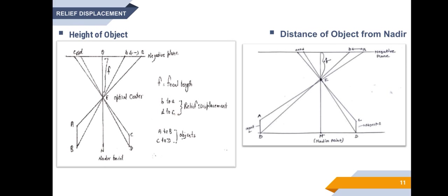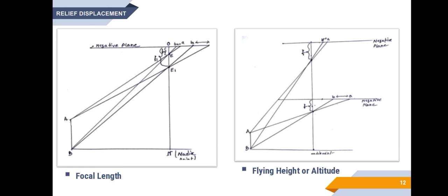In the second case — distance of object from the nadir — two objects of the same height are located at two different distances from the nadir point. When the distance of an object is more from the nadir, its relief displacement will be more, and vice versa. Next is the effect of focal length. When the same object having a particular height is photographed with different focal lengths, namely F and F1, relief displacement increases with increase in focal length and decreases with a decrease in focal length.